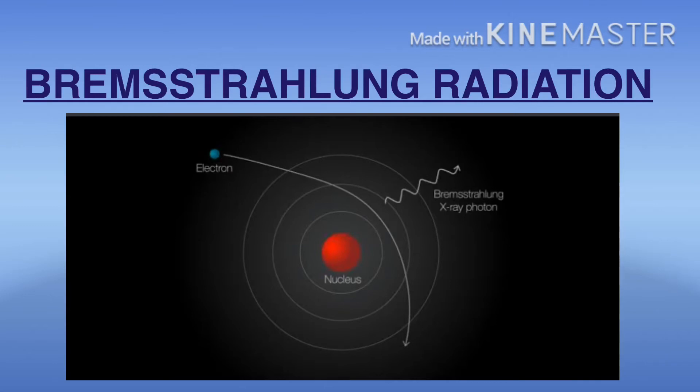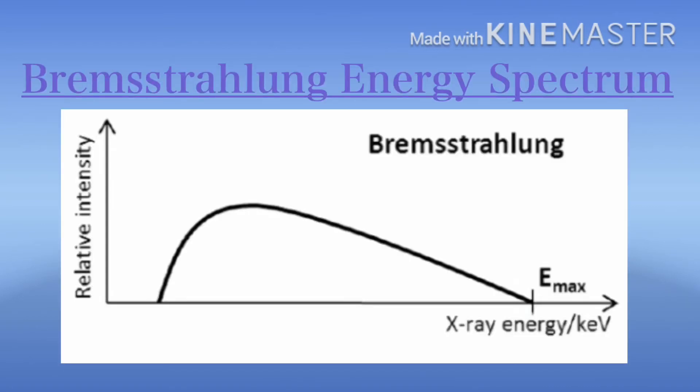Bremsstrahlung is a German word that means breaking radiation or deceleration radiation. Simply, how Bremsstrahlung Radiation is produced: it is produced by the deceleration of a charged particle when deflected by another charged particle. The charged particle is an electron that is deflected by the atom nucleus. Bremsstrahlung Radiation comprises 70 to 90% of the x-ray beam.